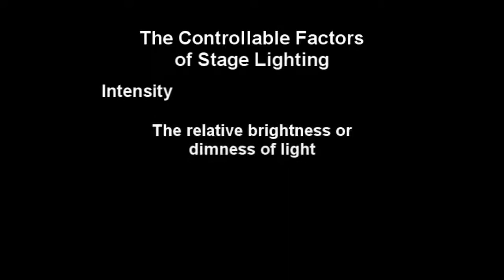In service of the functions of stage lighting, one of the controllable factors a designer considers is intensity. The intensity of light — that is to say the relative brightness or dimness of light — can be controlled in several ways. When we spoke of the functions of stage lighting, we said that the visibility of a production is affected by the intensity of light. If the light directed into an area is too bright or too dim, it will cause eye strain on the audience.